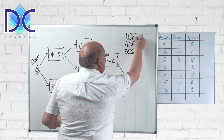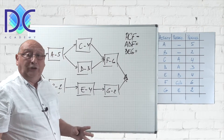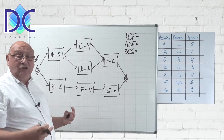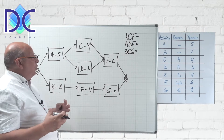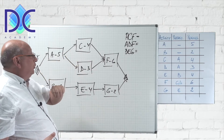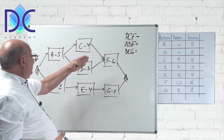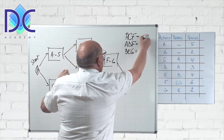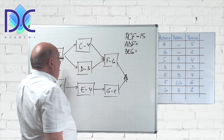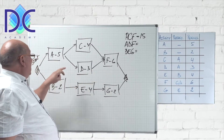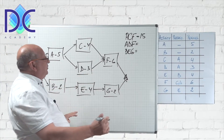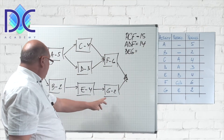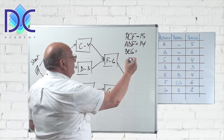The next step is to calculate the duration of each path by adding the durations of its activities. For A–C–F it's five plus four plus six, which is fifteen. For A–D–F it's five plus three plus six, which is fourteen. For B–E–G it's two plus four plus two, which is eight.